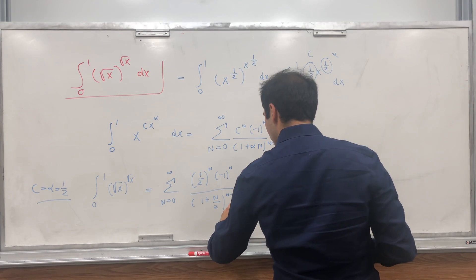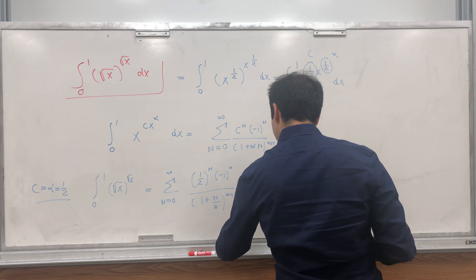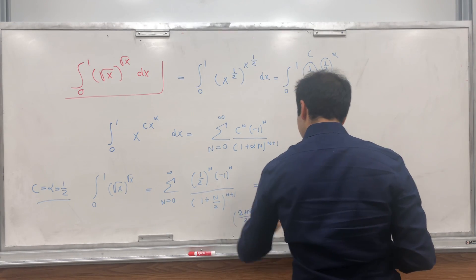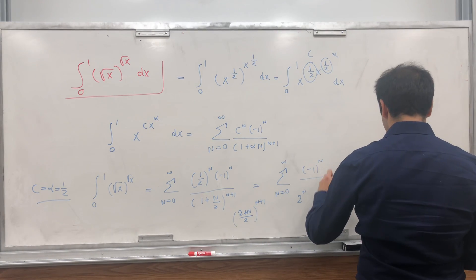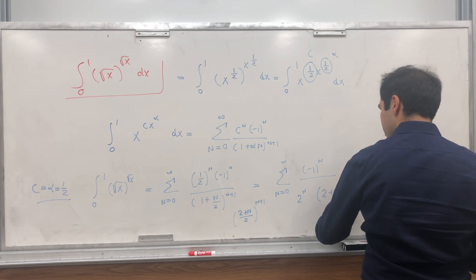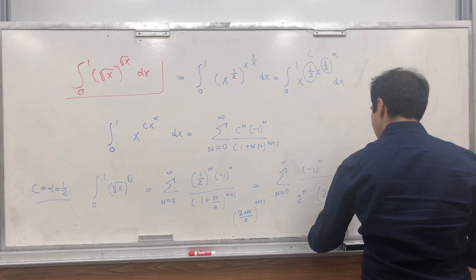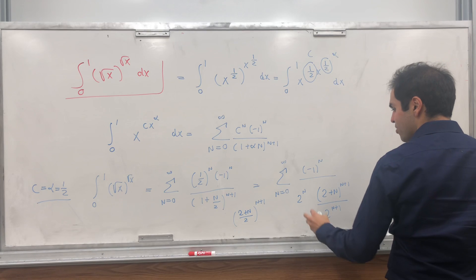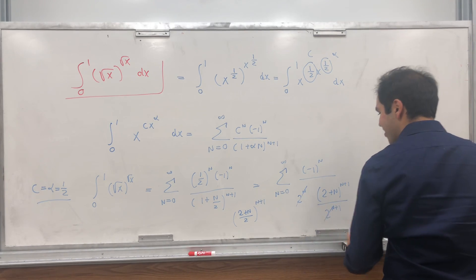And this 1 plus n over 2, you write this as 2 plus n over 2 to the n plus 1, and so you get, if you want, n plus 2 or 2 plus n to the n plus 1 over 2 to the n cancel out.